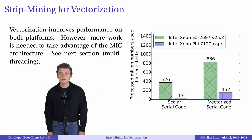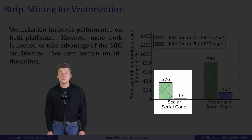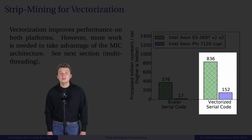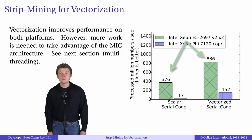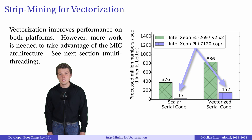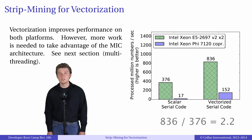Now let's look at the performance results of this optimization technique. In the bar chart presented here, we have two groups. The first group on the left shows execution times in seconds of the unoptimized scalar code. The second group corresponds to the vectorized version with strip mining. Green bars correspond to execution times on the Xeon CPU and blue bars on the Intel Xeon Phi coprocessor. With strip mining, vectorization, and strength reduction, we improved performance by a factor of 2.2 on CPU and by a factor of 8.9 on the coprocessor.